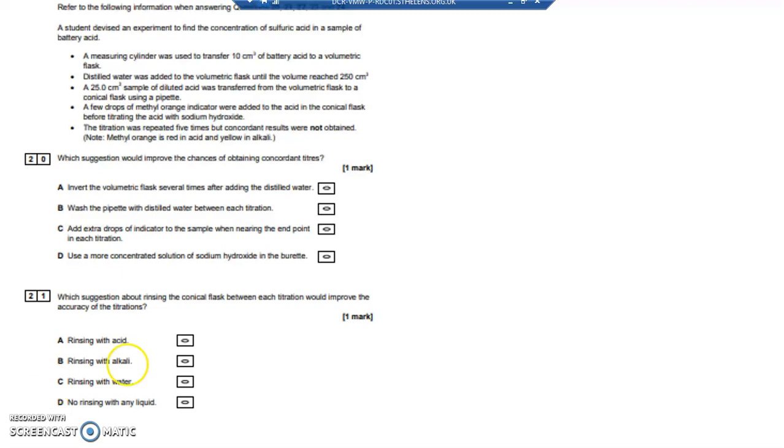The sodium hydroxide is going to slowly neutralize the acid, and at the point of neutralization, the methyl orange indicator goes yellow once you've got a neutral solution or a slight excess of the alkali in the conical flask.